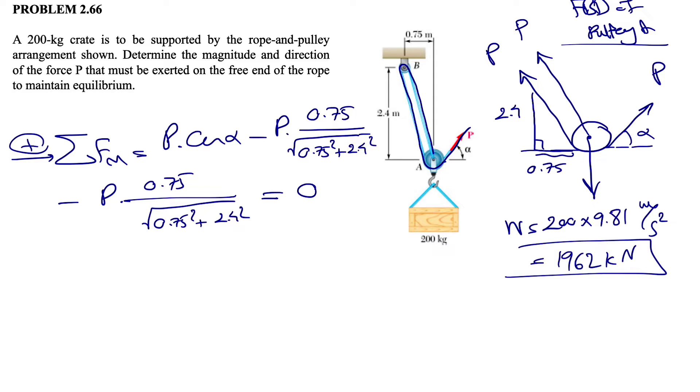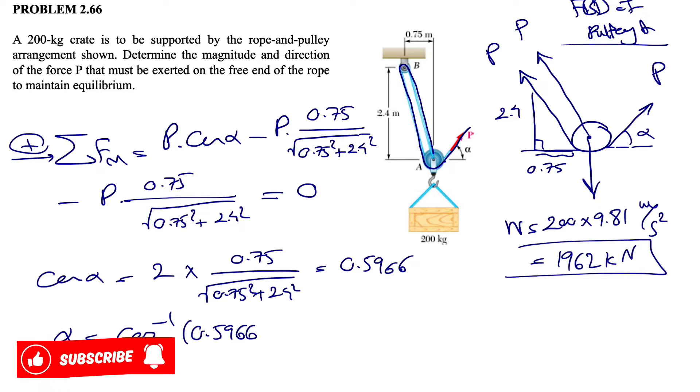Since we have two P's and they have the same angle, they're parallel to each other, so we can just add the other one the same, equals zero. From here we can cancel out the P from this equation and we'll end up having cosine of alpha equals two times 0.75 divided by square root of 0.75 squared plus 2.4 squared.